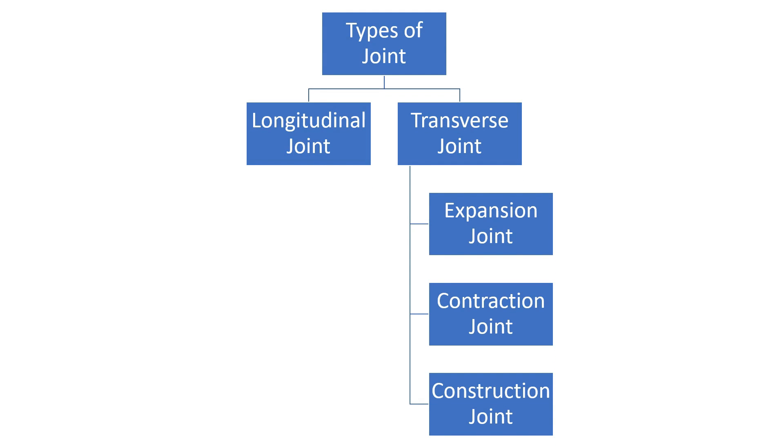Basically, joints are divided into two types: longitudinal joints and transverse joints. Transverse joints are subdivided into three types, namely expansion joint, contraction joint, and construction joint. Now we'll understand all these joints in detail.